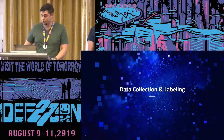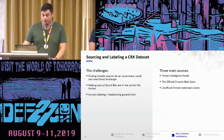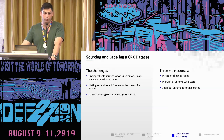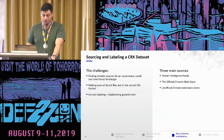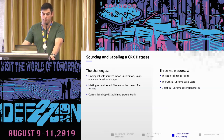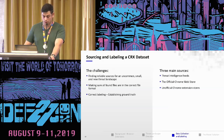Now we'll talk about the data collection and labeling process. When sourcing datasets of CRX files, we had several challenges: finding reliable sources in this highly uncommon and rather new threat landscape, making sure all files were actually in the correct CRX format, and knowing how to distinguish malicious from non-malicious ones. For that, we used three sources: threat intelligence feeds such as VirusTotal and Threat Reversing Labs, the official Chrome Web Store, and unofficial Chrome stores — which are basically stores that crawl the official store and offer the same extensions.